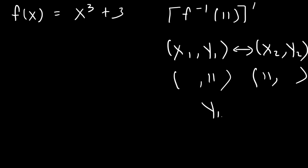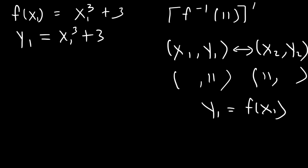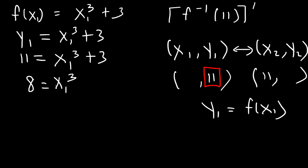Keep in mind, y1 is f of x1. So x1 and y1 correspond to the original function f of x. We can say that y1 equals x sub 1 raised to the third power plus 3. We know y1 equals 11, so we set x1 cubed plus 3 equal to 11. 11 minus 3 is 8, and the cube root of 8 is 2. So x1 is 2, which means y2 is also 2.